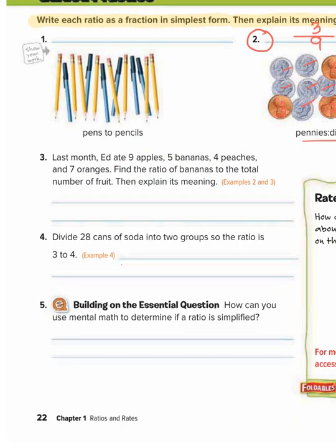Now we're going to go on to number three. This says last month Ed ate nine apples, five bananas, four peaches, and seven oranges. Find the ratio of bananas to the total number of fruit, then explain its meaning.